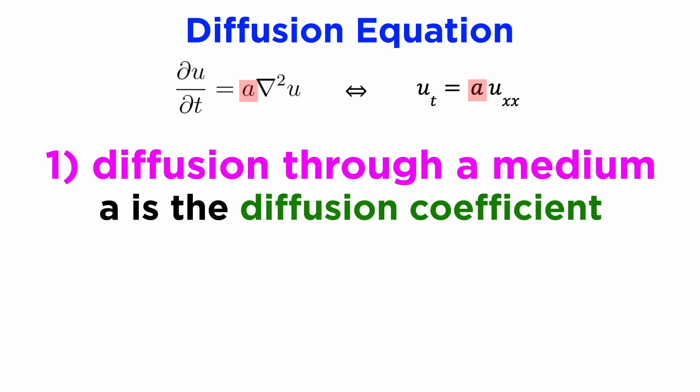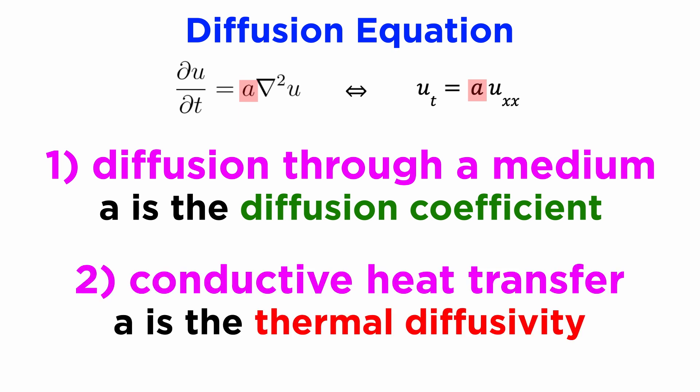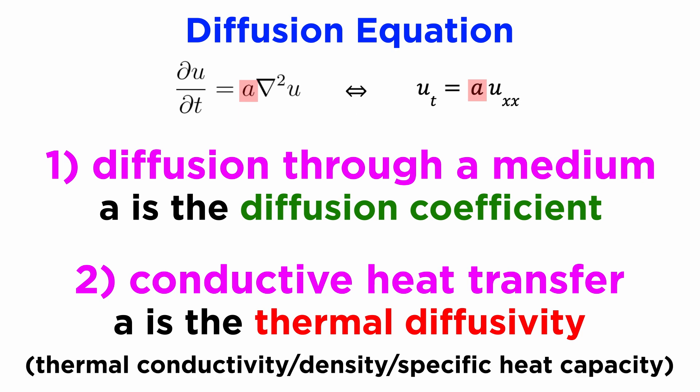In material diffusion problems, the constant a is known as the diffusion coefficient, and in heat transfer problems, the constant a is known as the thermal diffusivity, which can be related to the more well-known properties thermal conductivity, density, and specific heat capacity.